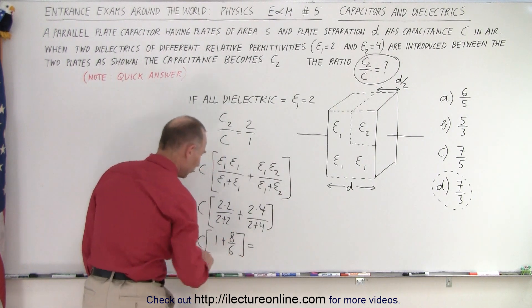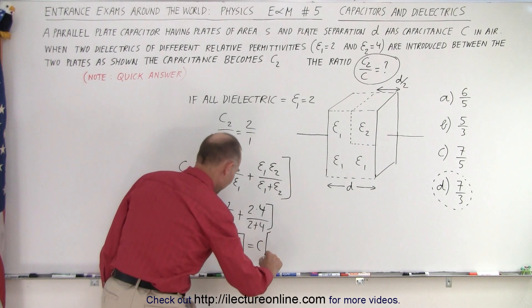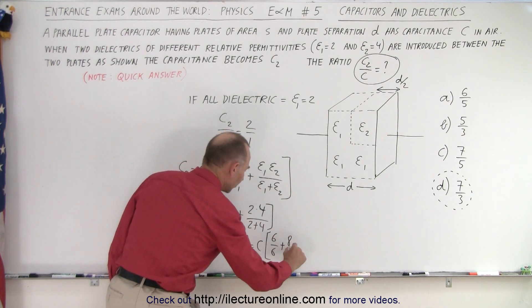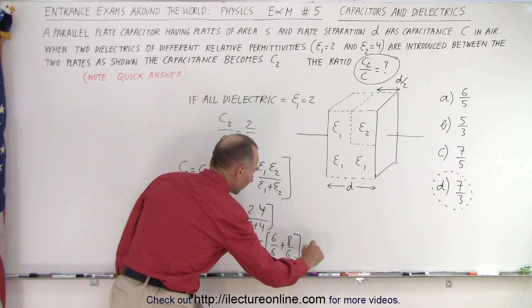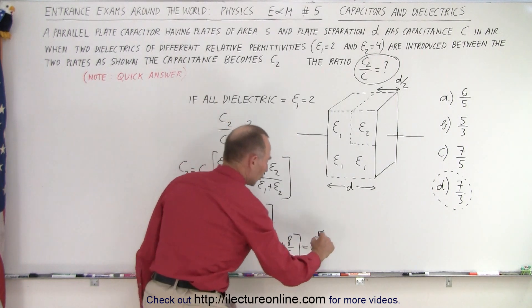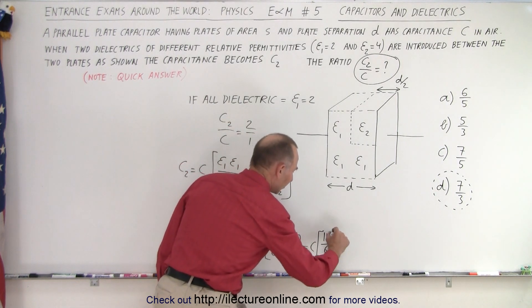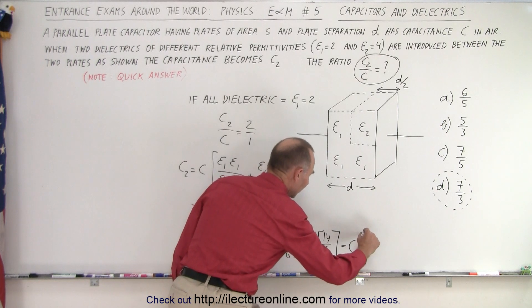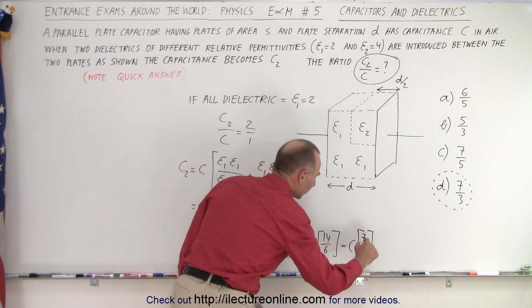We get c times 6 over 6 plus 8 over 6, which is equal to c times 14 over 6.